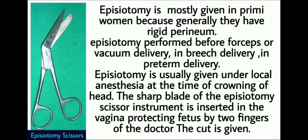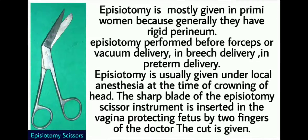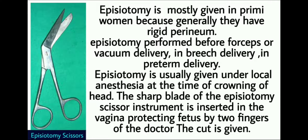Episiotomy is mostly given in primip women because generally they have a rigid perineum. It is performed before forceps or vacuum delivery, in breech delivery, and in preterm delivery. Episiotomy is usually given under local anesthesia at the time of crowning of the head. The sharp blade of the episiotomy scissor instrument is inserted into the vagina, protecting the fetus with two fingers of the doctor, and then the cut is given.